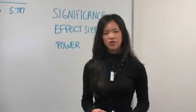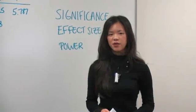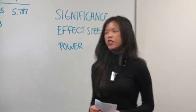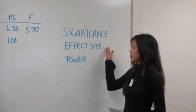We're still talking about ANOVA, which is a one-way analysis of variance. That means we've got one independent variable and one dependent variable. When you're doing ANOVA, there's always three things that you want to consider: significance, effect size, and power.